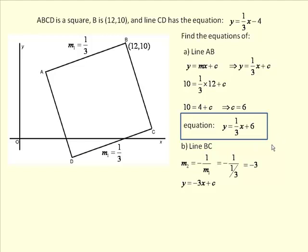So, once again, we can work out that the equation is y = -3x + c. We don't yet know where c is, but once again, we know it goes through this point B, (12,10).